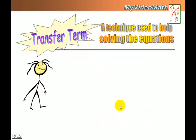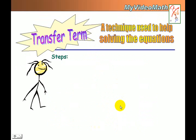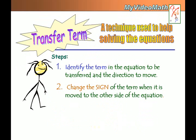Therefore, we know transfer term follows the same rules. Here are the steps: First, identify the term in the equation to be transferred and the direction to move. Second, change the sign of the term when it is moved to the other side of the equation.